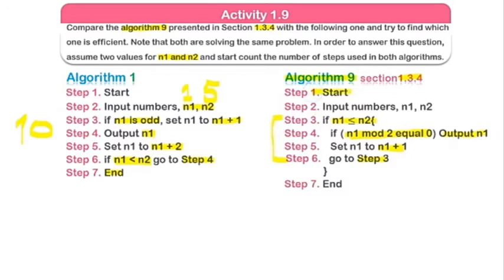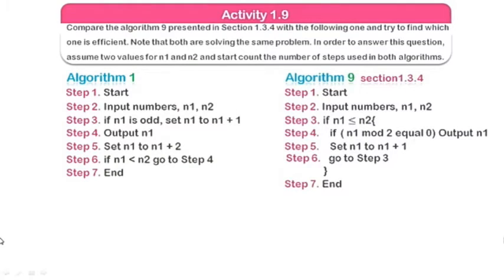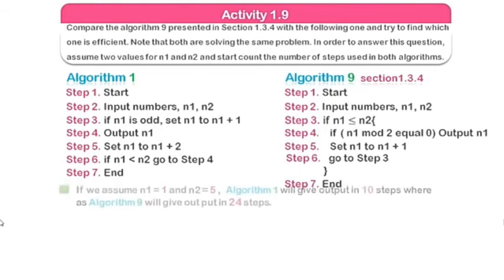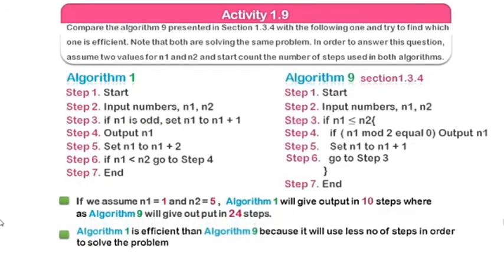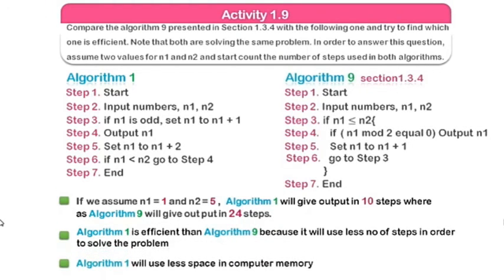Algorithm nine takes 23 steps, plus one more — step six — because when we take five and add one to get six, we check from step three that six is not equal to five and not less than five. So the total steps in algorithm nine are 24, while algorithm one only takes 10 steps. Therefore, algorithm one is much more efficient compared to algorithm nine — it uses less computer memory and fewer steps.